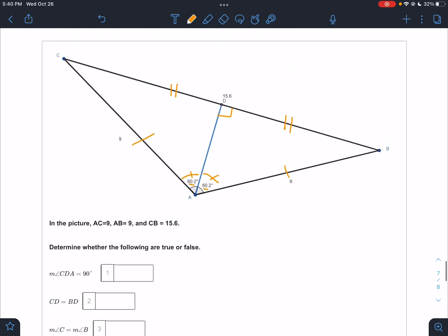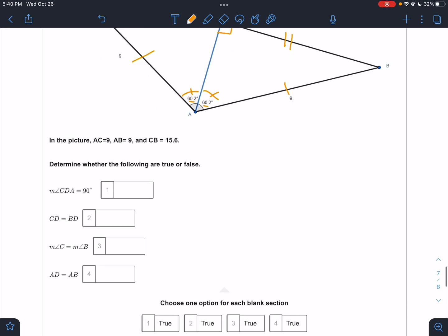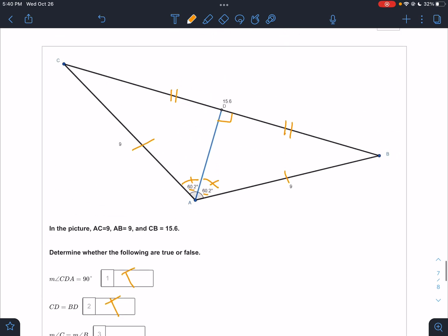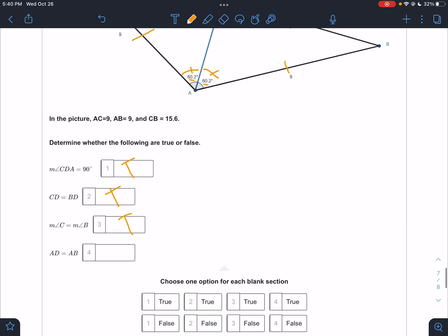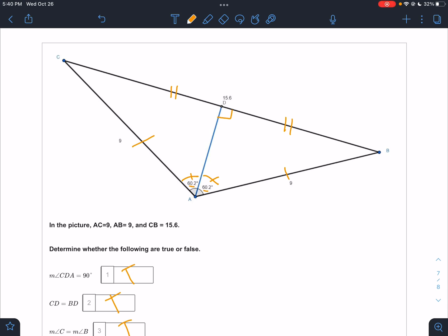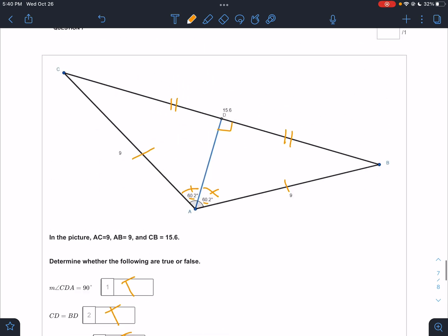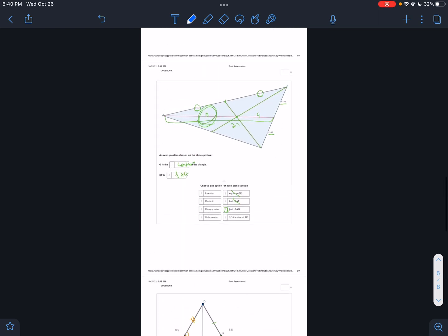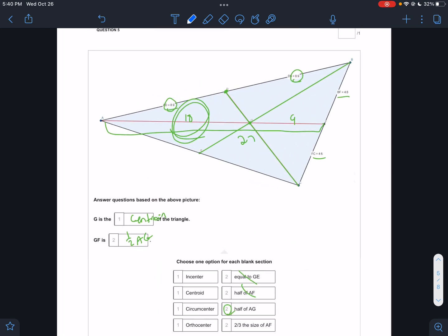So determine whether it's true or false. Angle CDA is 90 degrees. True. CD equals BD. True. Angle C equals angle B. True. AD equals AB. False. How do I know that? Here's AD. Here's AB. That's a right triangle. Isn't this the hypotenuse? Yeah. The hypotenuse is the longest side. So can AD and AB be equal? No, they cannot. All right. There you go. There's the answers. Hopefully you try those before you look at my video.